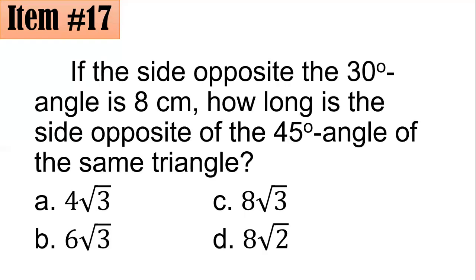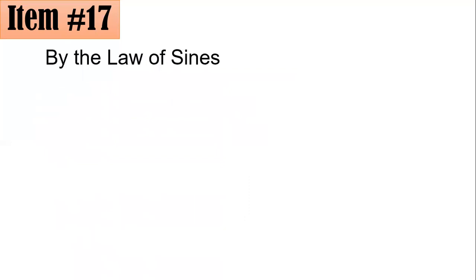Number 17. If the side opposite the 30 degree angle is 8 cm, how long is the side opposite of the 45 degree angle of the same triangle? Did you go for 4 square root of 3, 6 square root of 3, 8 square root of 3, or 8 square root of 2? For this problem, you could actually employ what we call the law of sines, especially if you are given two pairs of angles and with their corresponding, I mean if you are given an angle together with its opposite side.